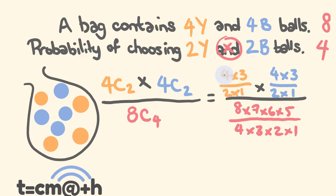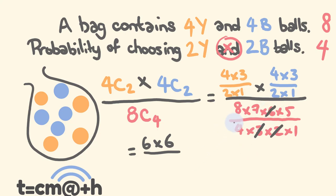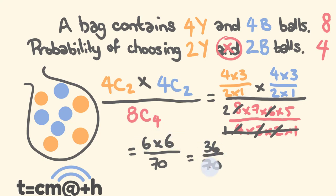4×3 = 12, divided by 2 = 6. Same for the other: also 6. So 6×6 on top. For the bottom, doing some cancelling: 2×3 = 6, and 8÷4 = 2, 4÷4 = 1, so we get 2×7×5 = 70. So 6×6 = 36 over 70. The probability of choosing two yellow and two blue balls is 36 out of 70.